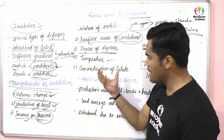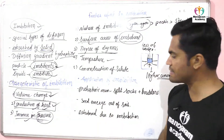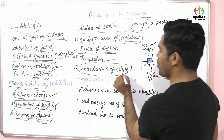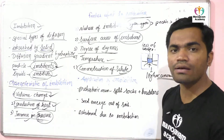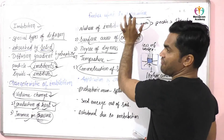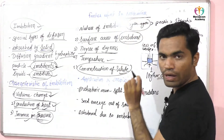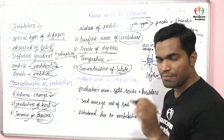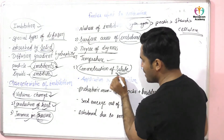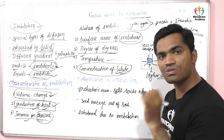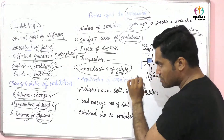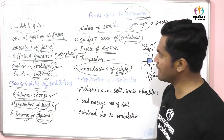The fourth factor is temperature — if temperature increases, the imbibition process also increases. Another factor is concentration of solute. If we add more solute to the solution, the imbibition process will decrease. So if more solute is added to the solution, the imbibition process will decrease. These are the factors that affect imbibition.